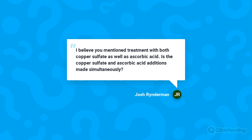Josh Reiterman asks whether copper sulfate and ascorbic acid can be added simultaneously. When you add ascorbic acid, it scavenges oxygen and produces hydrogen peroxide in the wine, so it's good to have a little sulfite present to capture that peroxide. You can add the ascorbic acid and then the copper sulfate right after. Wait about two days before assessing the wine — two days is typically enough time for the copper to take full effect.